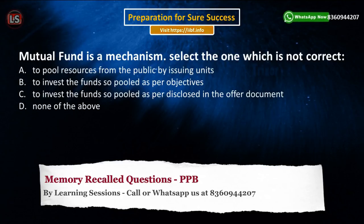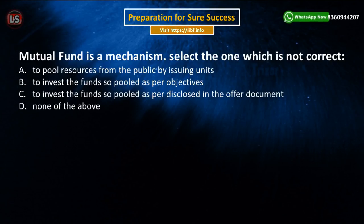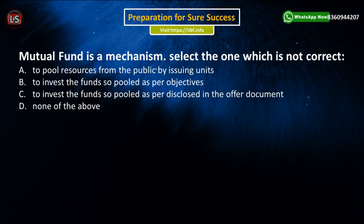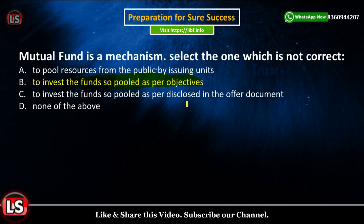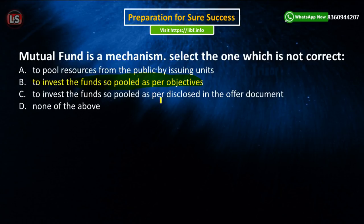Today's first question says: Mutual fund is a mechanism — select the one which is NOT correct. Mutual fund is a mechanism to pool resources from the public by issuing units. Option B says to invest the funds so pooled as per objectives — this option is wrong. Option C says to invest the funds so pooled as per what is disclosed in the offer document — that is correct. So our answer is Option B.